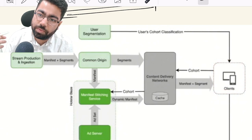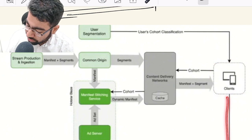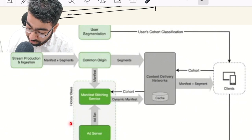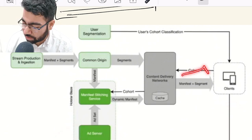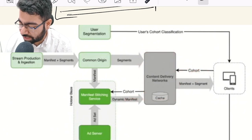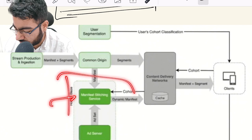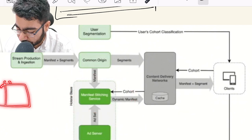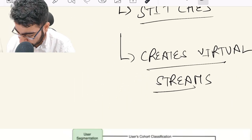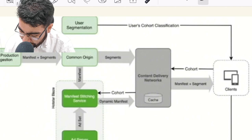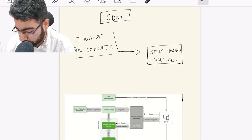When the client makes a call to the CDN, it passes which cohort it belongs to. The client is always sending data to Hotstar Pulse, a system connected to the ad server, which determines which client belongs to which cohort. So the client tells the CDN its cohort, and the CDN sends the virtual stream of that particular cohort to the client. The stitching service is what actually adds the ads between the incoming live stream segments.